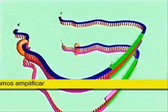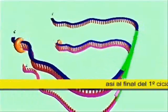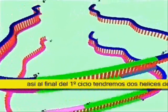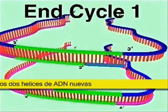At the end of cycle one, both strands of the genomic DNA molecule have been copied to form two partially double-stranded DNA molecules.